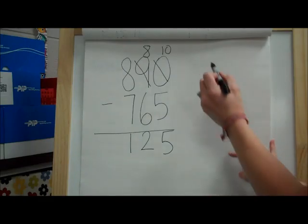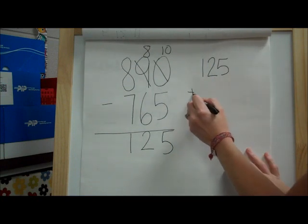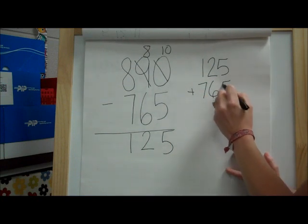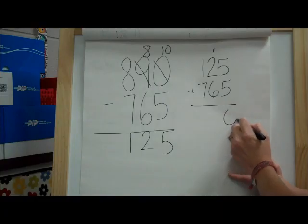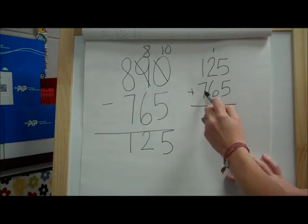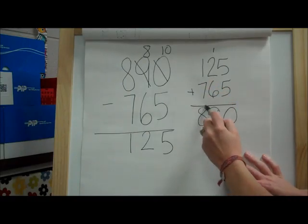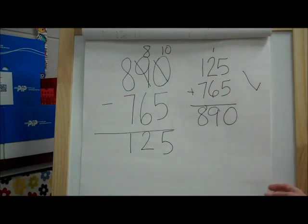And we could check it by adding. So let's do that. Let's do 125 plus 765. 5 plus 5 is 10. 6 plus 2 plus 1 is 9. And 7 plus 1 is 8. And we got the same numbers. So we are correct again.